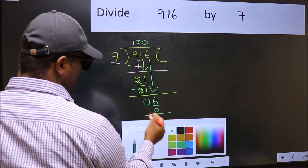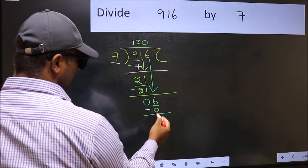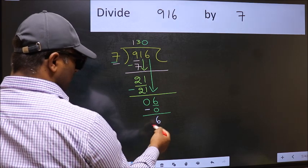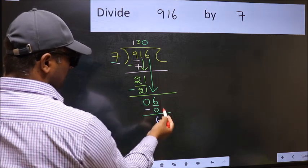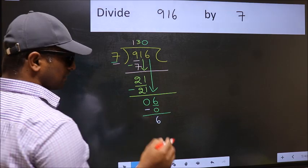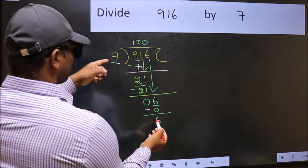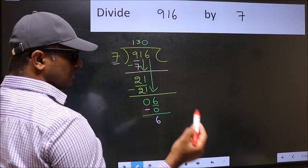Now you should subtract: 6 minus 0 equals 6. Over here, we did not bring any number down, and 6 is smaller than 7. So now you can put dot and take 0.